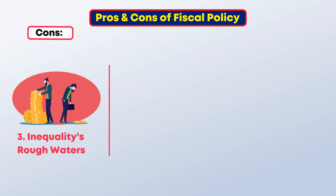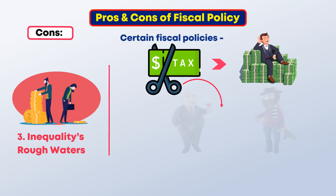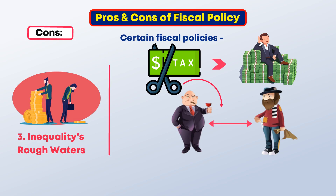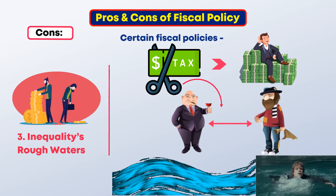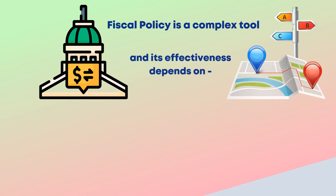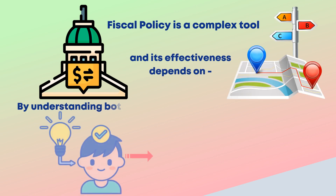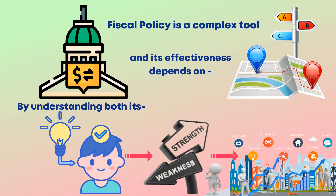Three, inequality's rough waters. Certain fiscal policies, like tax cuts for the wealthy, can widen the gap between the rich and the poor, creating choppy waters for social mobility and leaving some people struggling to stay afloat. Remember, fiscal policy is a complex tool and its effectiveness depends on careful navigation. By understanding both its strengths and weaknesses, we can work together to steer the economy towards a brighter future for all.